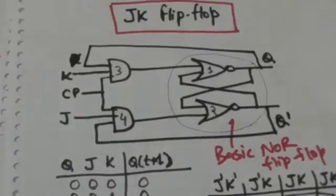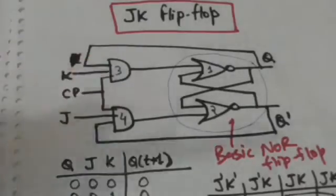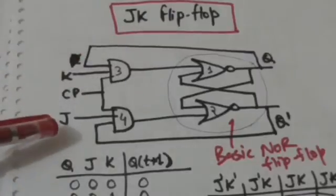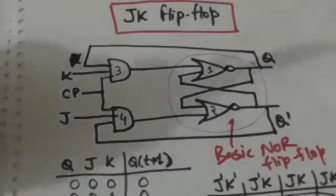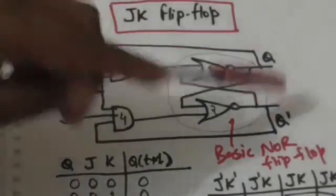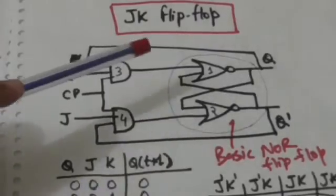Hello friends, welcome back. In this tutorial we will study about JK flip-flop. This is the logic diagram of JK flip-flop. It has two inputs J and K and two outputs Q and Q-not, which are complements of each other. Q gives the normal value of the bit stored.